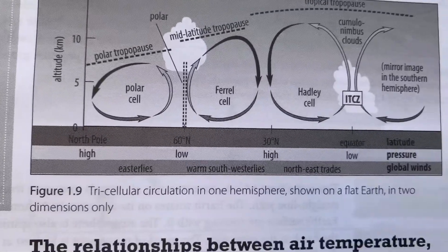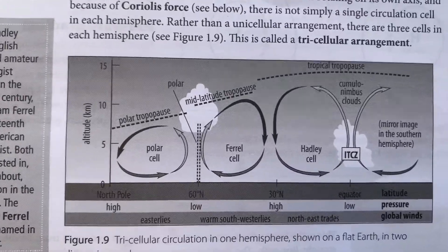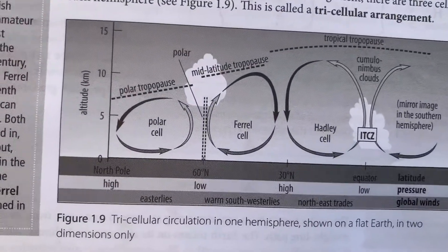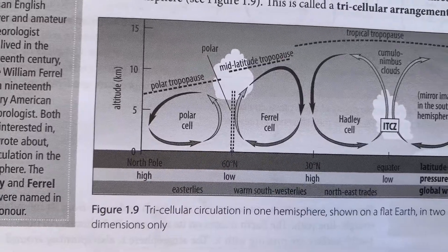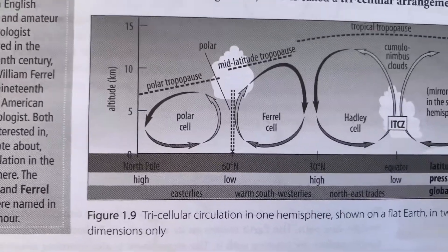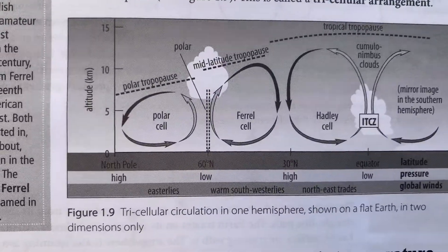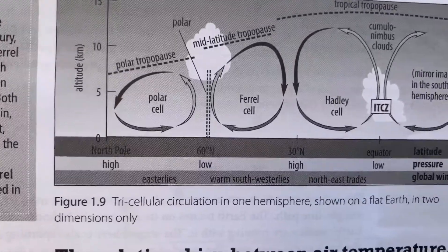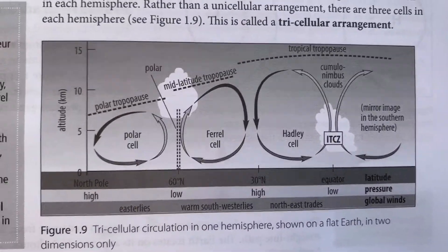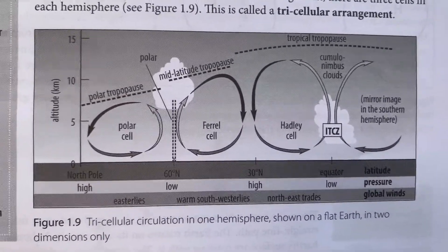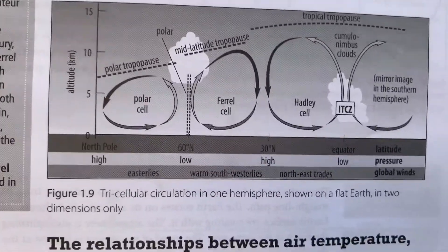The Ferrel cell does not flow according to temperature but flows according to the directions of either the Hadley cell or the Polar cell — that is why there is divergence between the Polar cell and Ferrel cell, and between the Ferrel cell and the Hadley cell. The Ferrel cell plays a role in transporting warm air from the equator towards the poles and cold air from the poles towards the equator, helping regulate the Earth's temperature, because without this the equator would be too hot and the poles too cold.